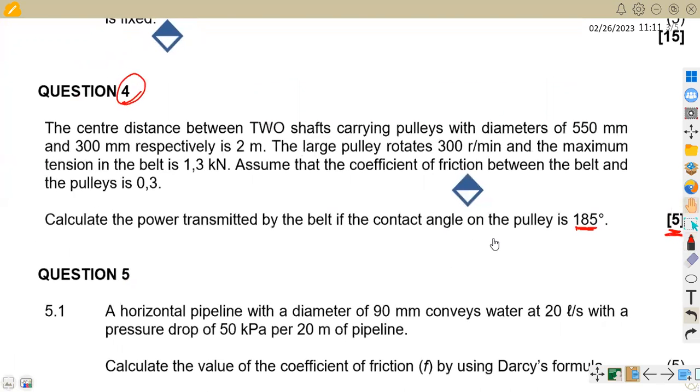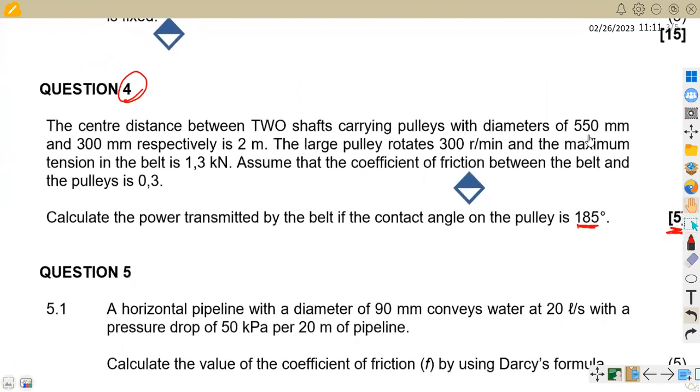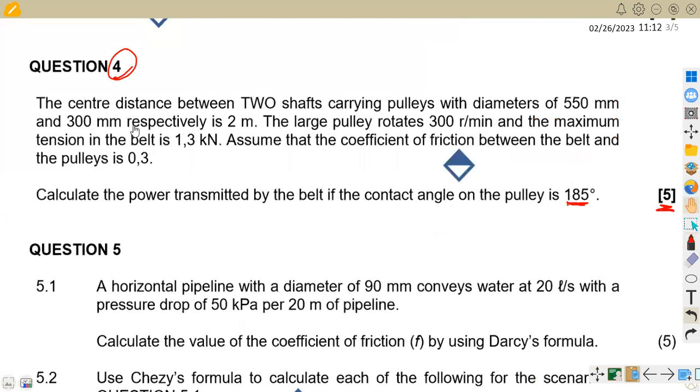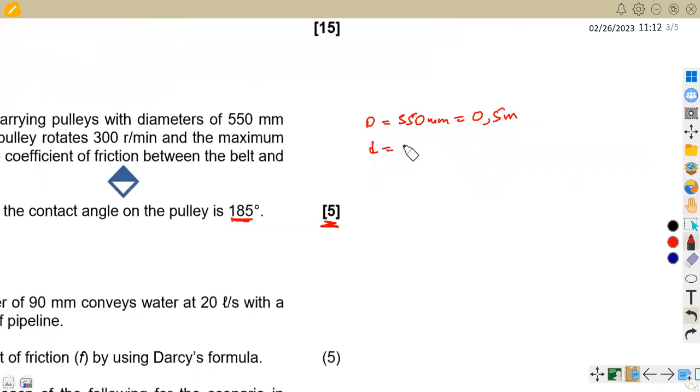So we've got the diameters 550 and 300. So we've got our diameter of 550 millimeters, which divided by 1000 is 0.5 meters. The smaller diameter, we have got 300 millimeters, which is 0.3 meters. Then the distance between those is two meters.